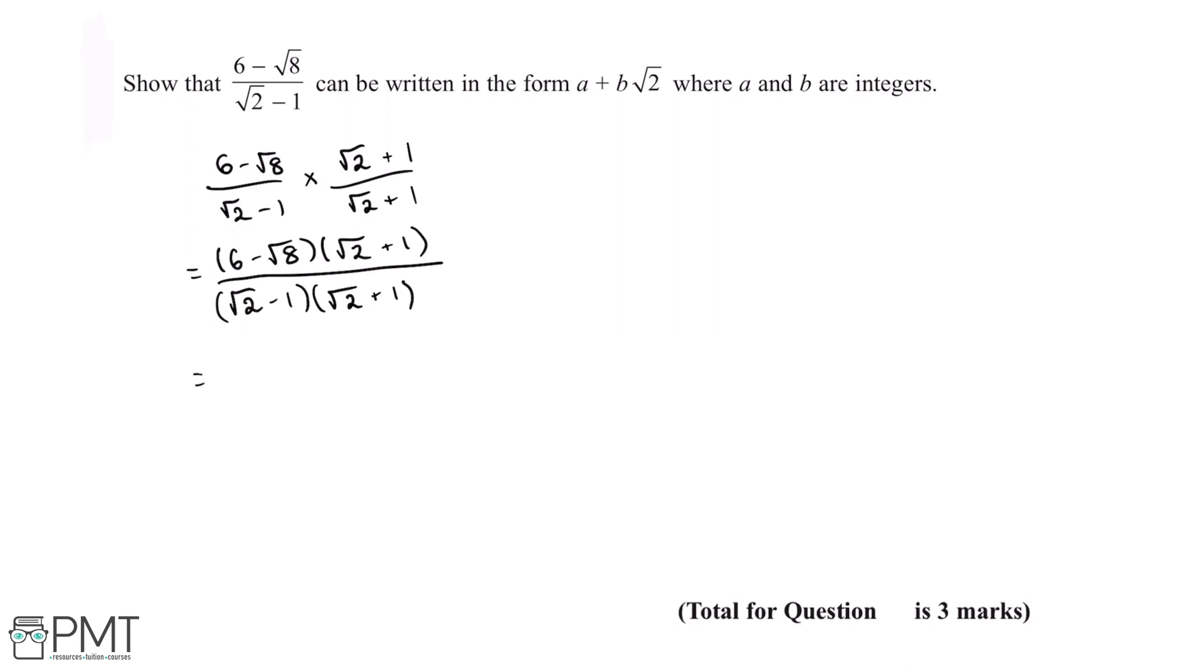So first we'll start off by multiplying 6 by √2 which will give us 6√2. 6 multiplied by 1 will give us 6. Negative √8 multiplied by √2 will give us negative √16.